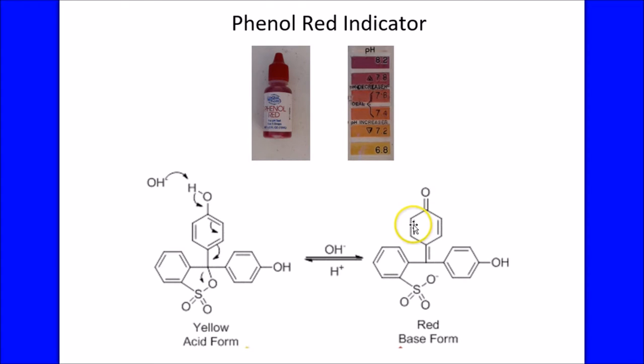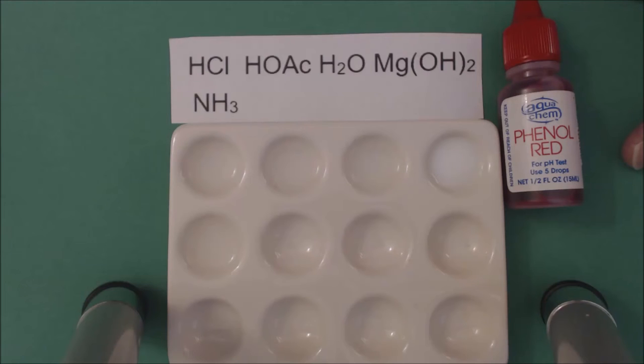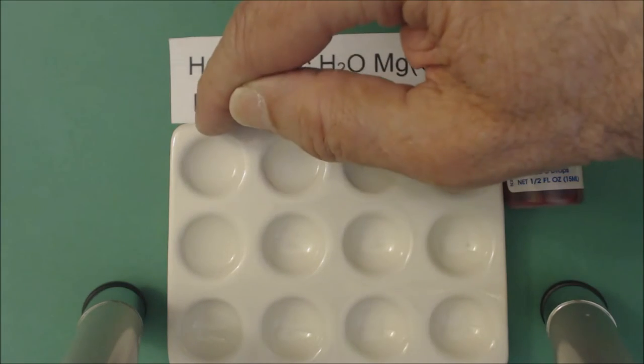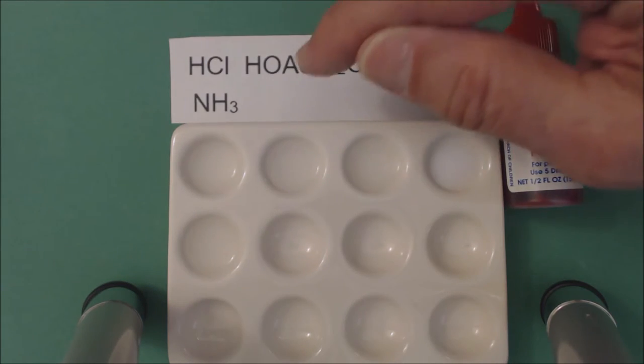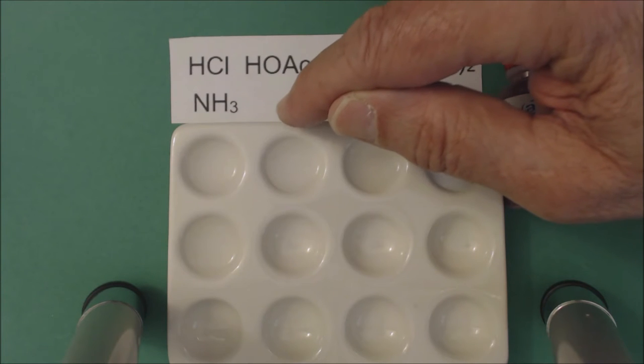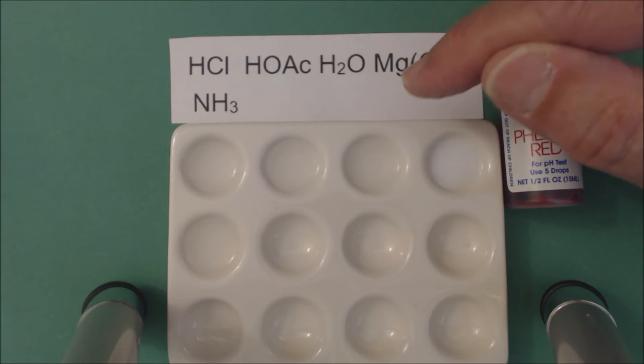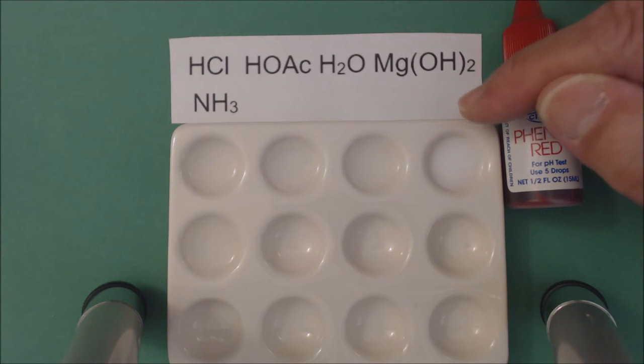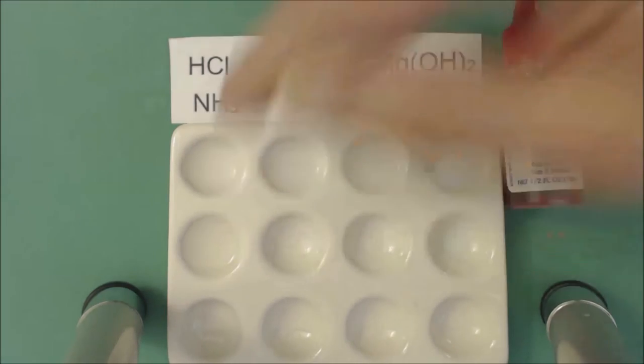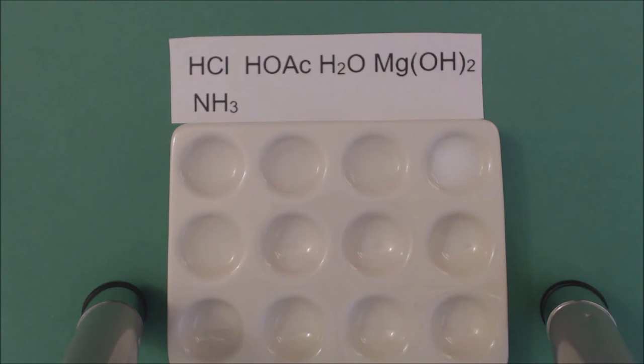In the next part, I'm going to show you how it works. Okay, we have five solutions here. We have 0.1 molar HCl, we have vinegar—just household vinegar—tap water, milk of magnesia which is magnesium hydroxide suspension of solid magnesium hydroxide in water, and down here we have household ammonia.